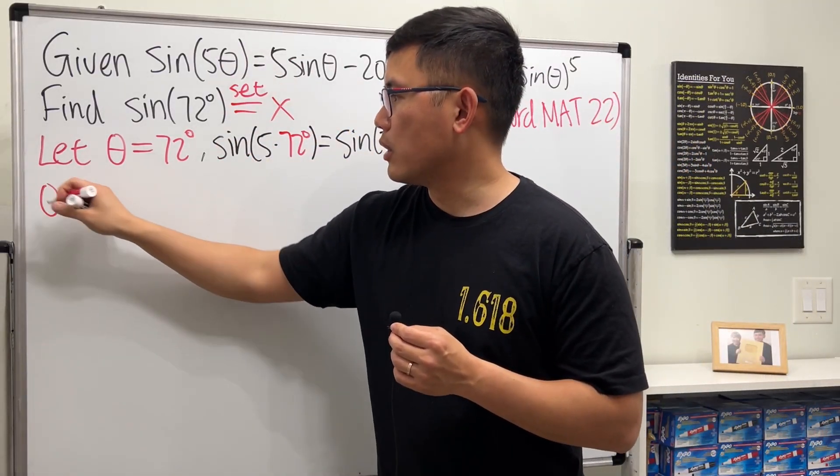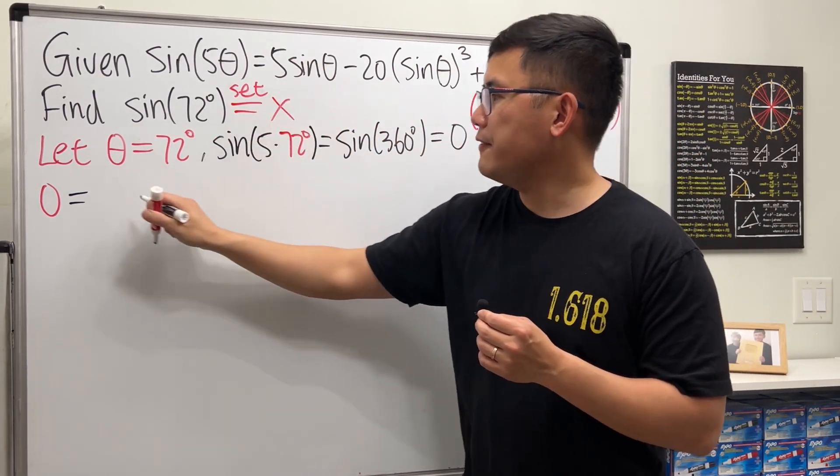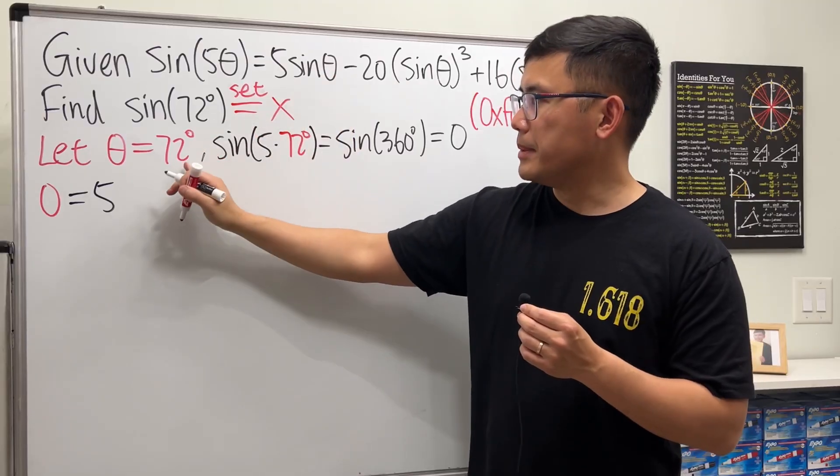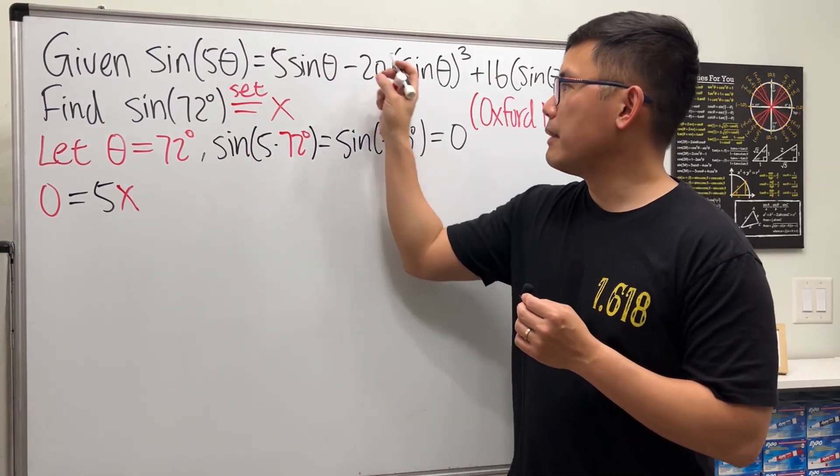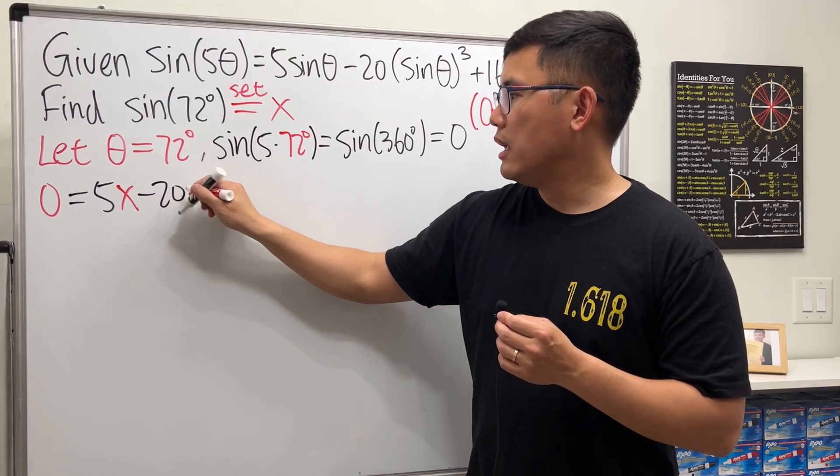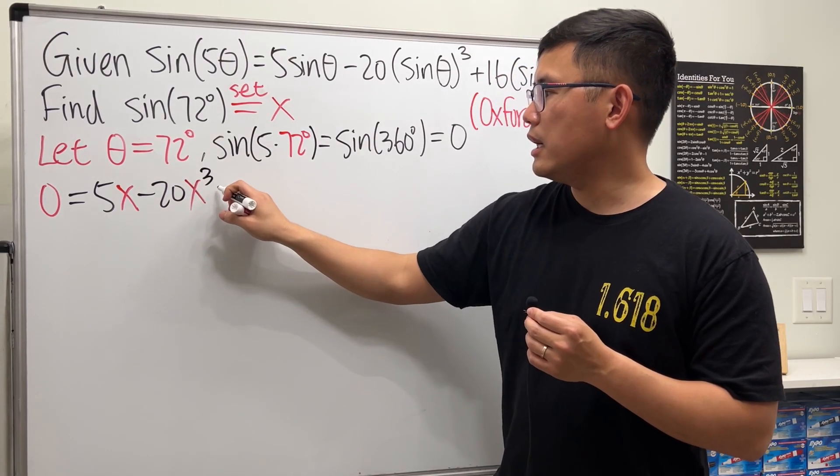If we put 72 degrees into all these θs here, then we get exactly what we're looking for. And for simplicity purpose, let's call this x. So we begin with zero, and then we will have 5 sine of 72, which is now just x.